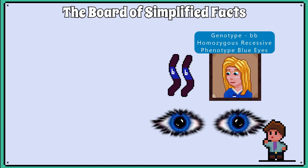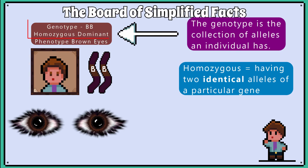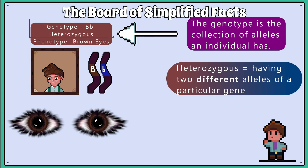A person could have two alleles for blue eye colour, one allele on one chromosome and one allele on the other chromosome, and be described as having a genotype that is homozygous. The genotype is the collection of alleles an individual has. You could have two alleles for brown eye colour and again have a homozygous genotype. Finally, you could have an allele for blue eyes and an allele for brown eyes, and say that you have a heterozygous genotype.